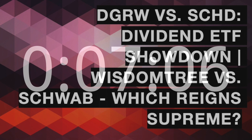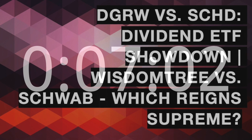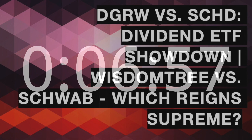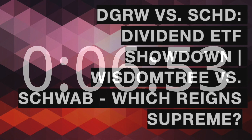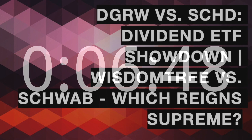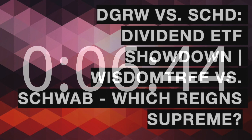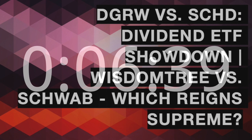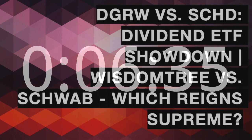DGRW — WisdomTree US Quality Dividend Growth ETF — is designed to provide exposure to US dividend-paying stocks with an emphasis on quality and growth. The fund tracks an index of dividend-paying companies with growth potential, applying a screening process that considers factors such as long-term earnings growth expectations, return on equity, and other quality metrics. DGRW's approach aims to identify companies that not only pay dividends but also have the potential to increase them over time.